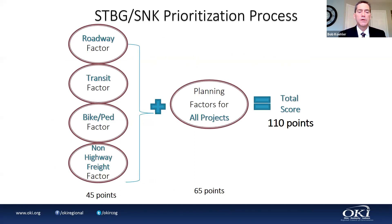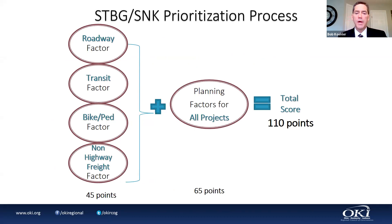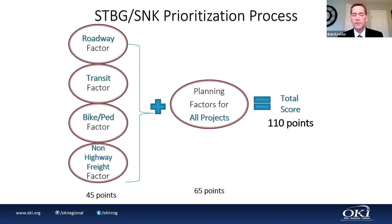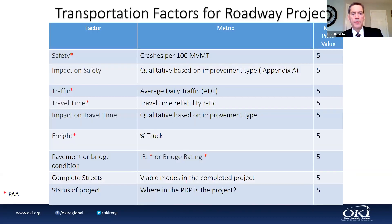Here's a graphic perspective on how the scoring process works. There are two sides of the STBG coin: one for modal factors and one for planning factors. You add them together to get a total, and then we rank projects by their score. The goal is to provide opportunity for all modes to compete on a level playing field. Each mode has individual elements different from other modes, while the planning factors for all projects are the same.